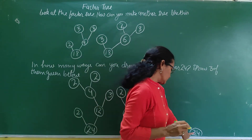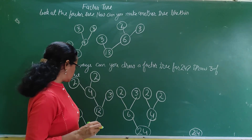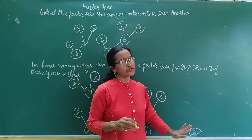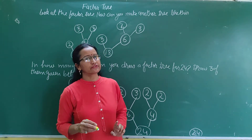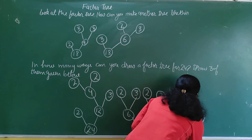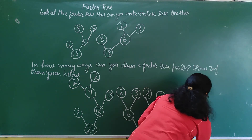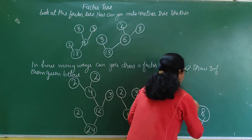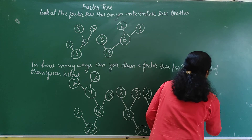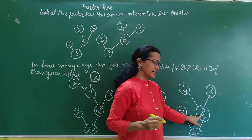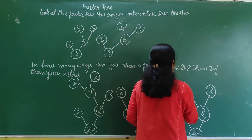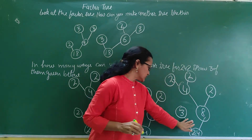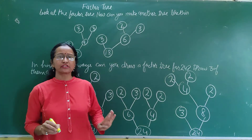Now next, 24 can also be broken as 8 threes are 24. So right here write 8 and 3. Now break 8. 4 twos are 8. So right here write 4 and 2. Now break 4. So 2 twos are 4. Write 2 and 2. So this is the third way where we made the factor tree of 24.